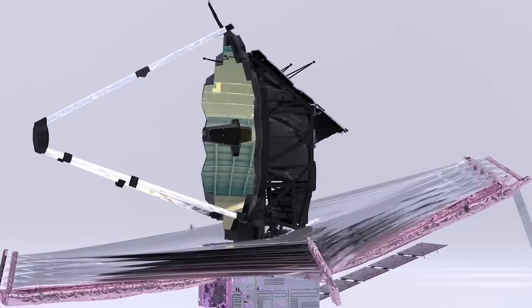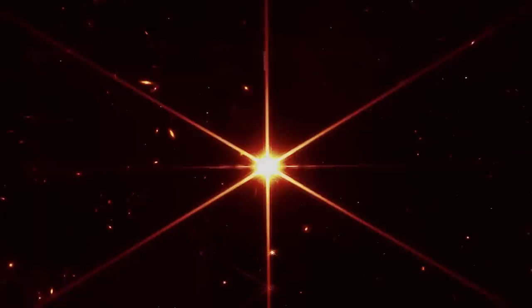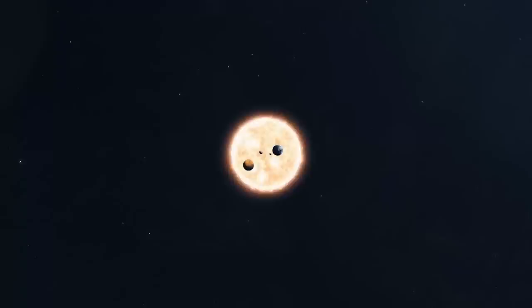The James Webb Space Telescope is finally up and running, and you're not going to believe what can be ascertained from just the first image it has sent back. What looks like a picture of just a regular star is in fact the key to unlocking the secrets of the universe. Scientists are jumping with joy at the potential for humanity to learn so much more about the space outside our atmosphere. This is the James Webb Space Telescope's first image explained.